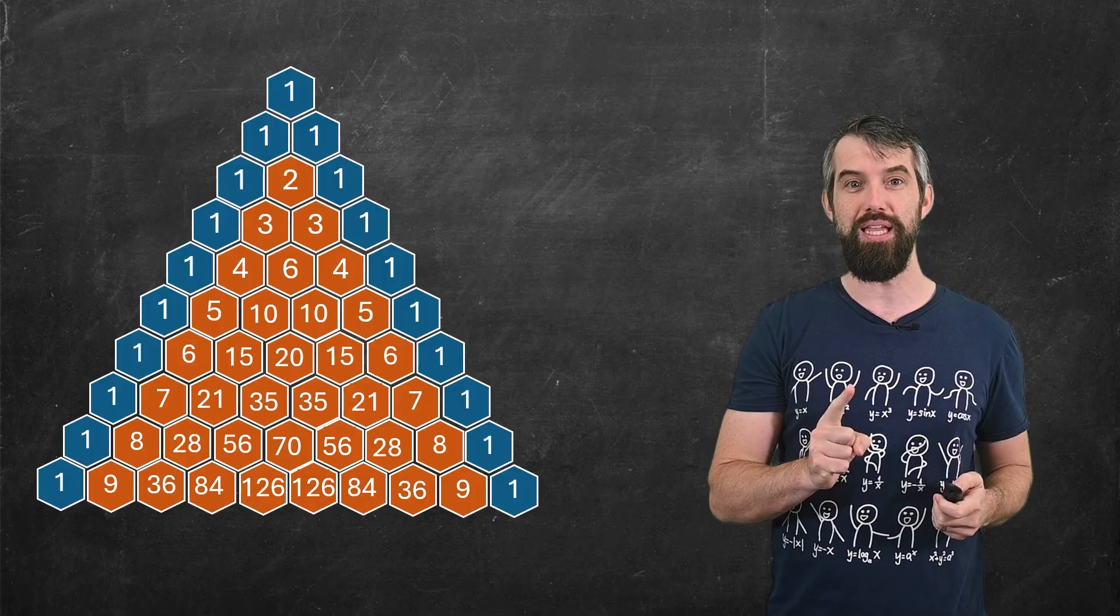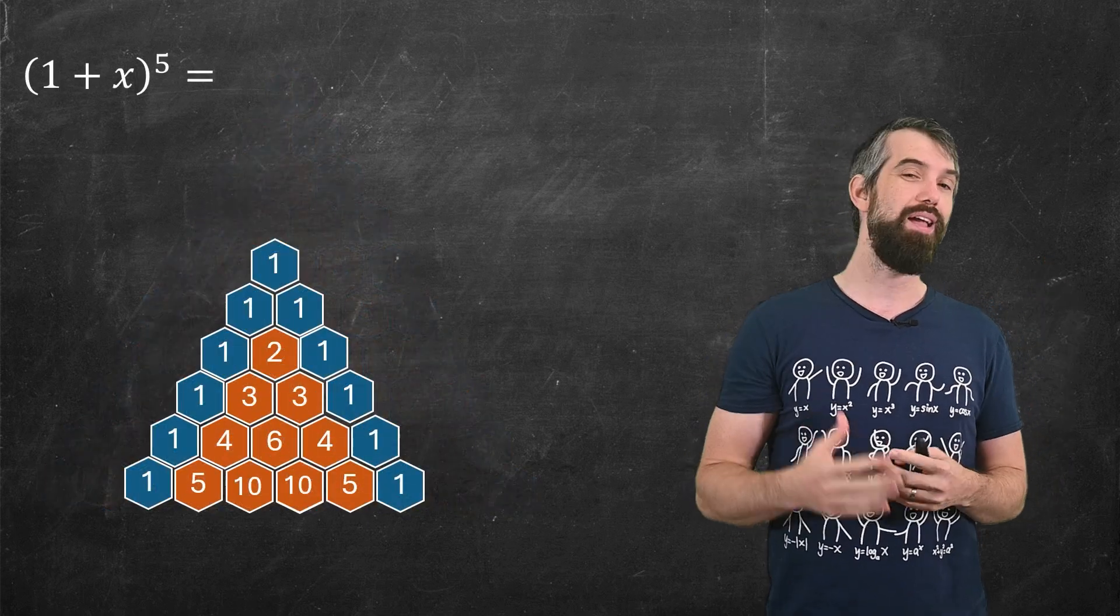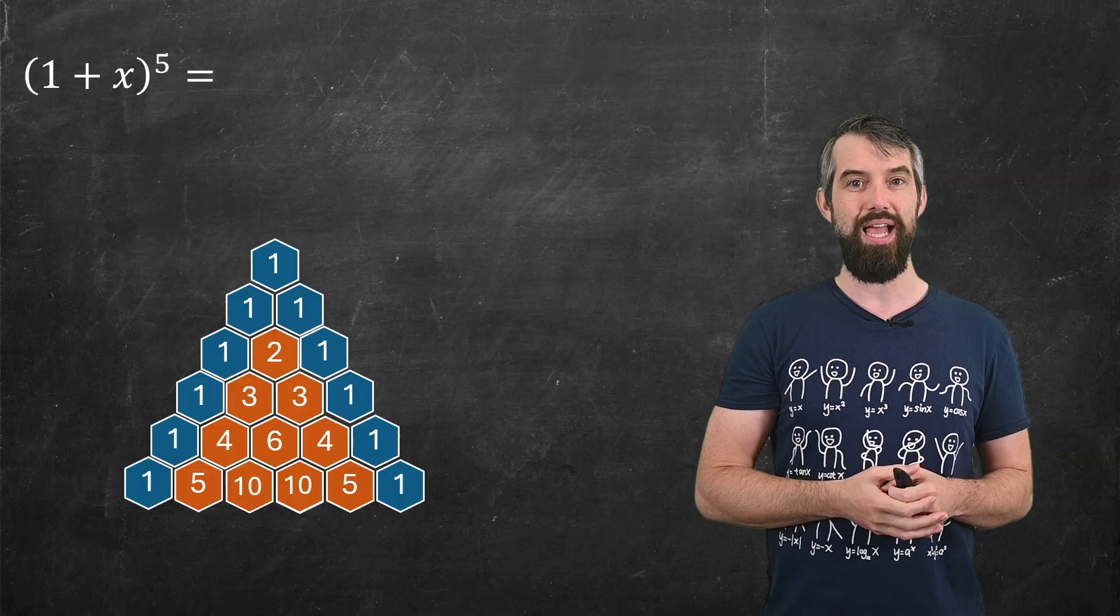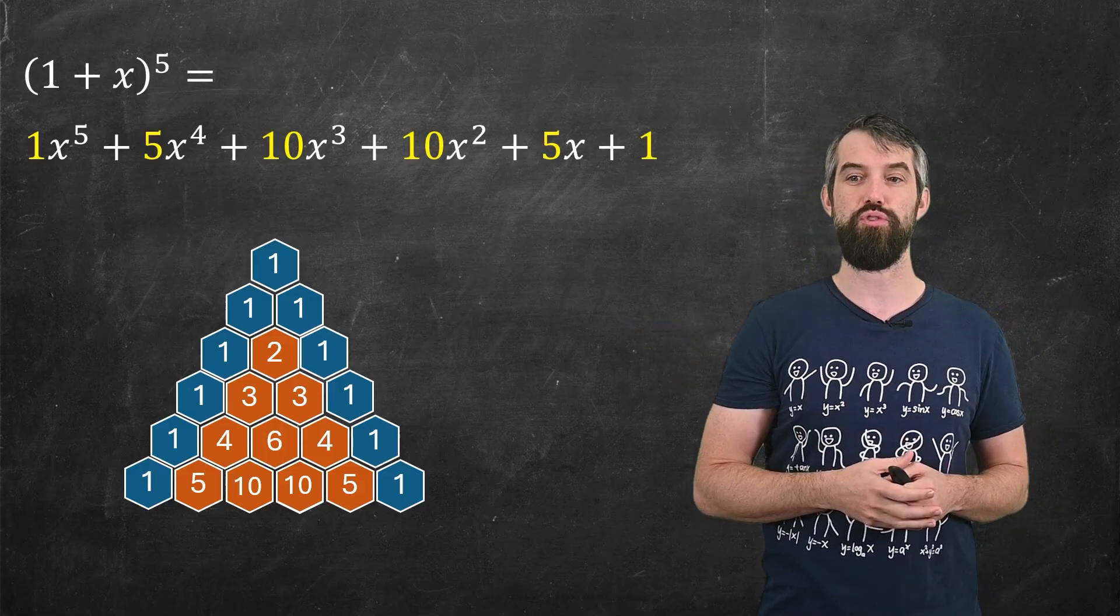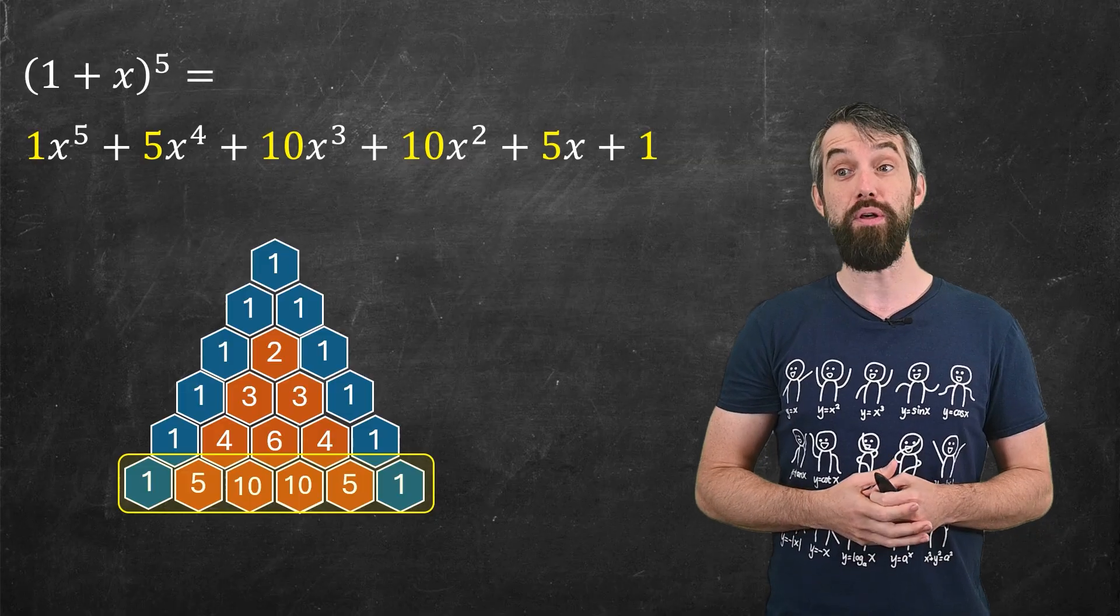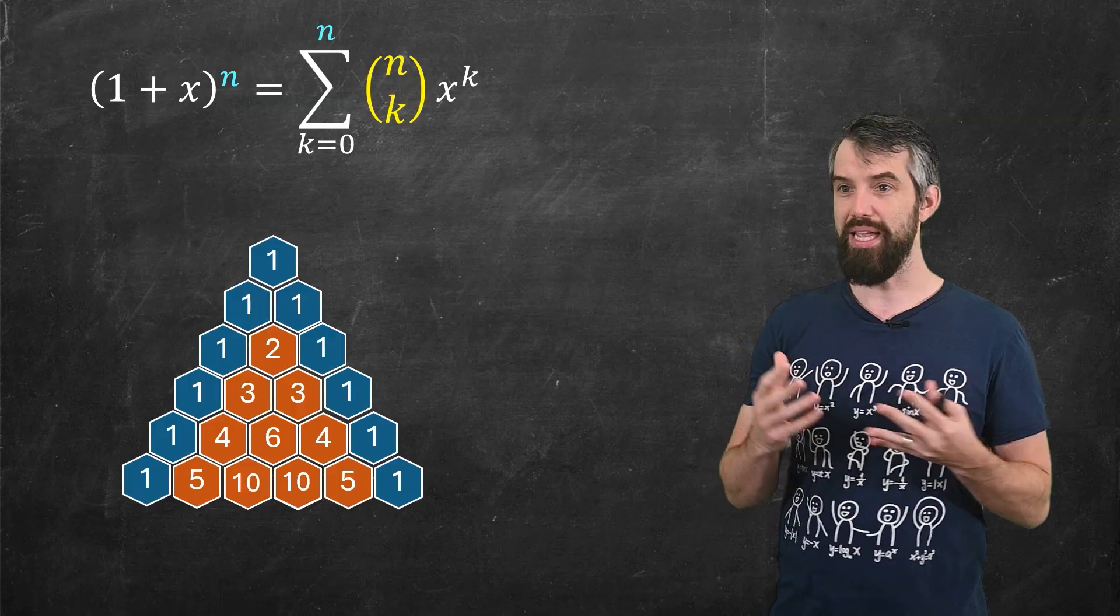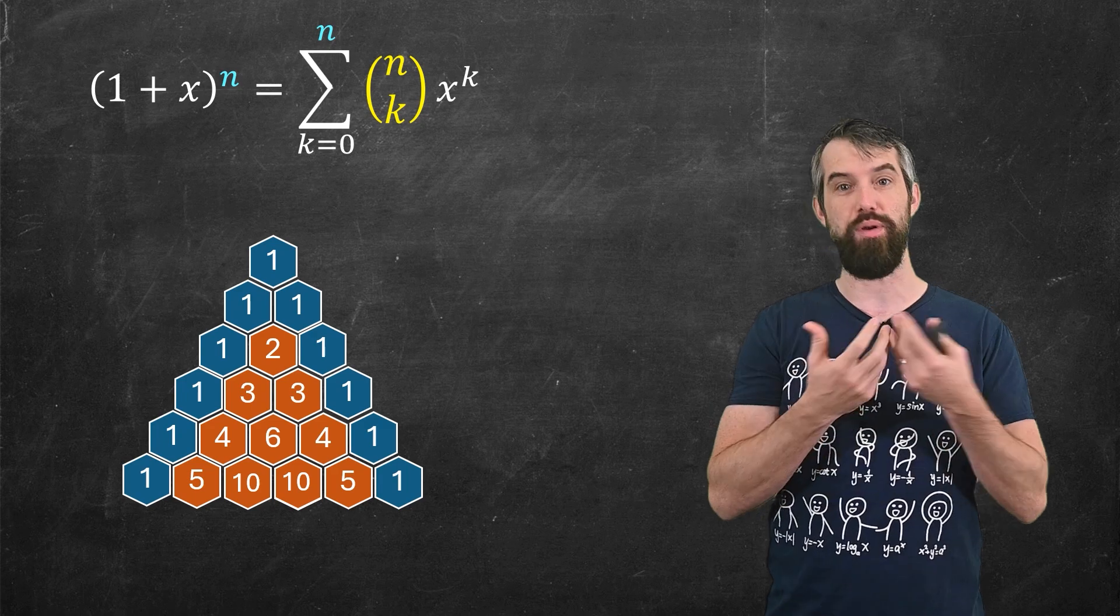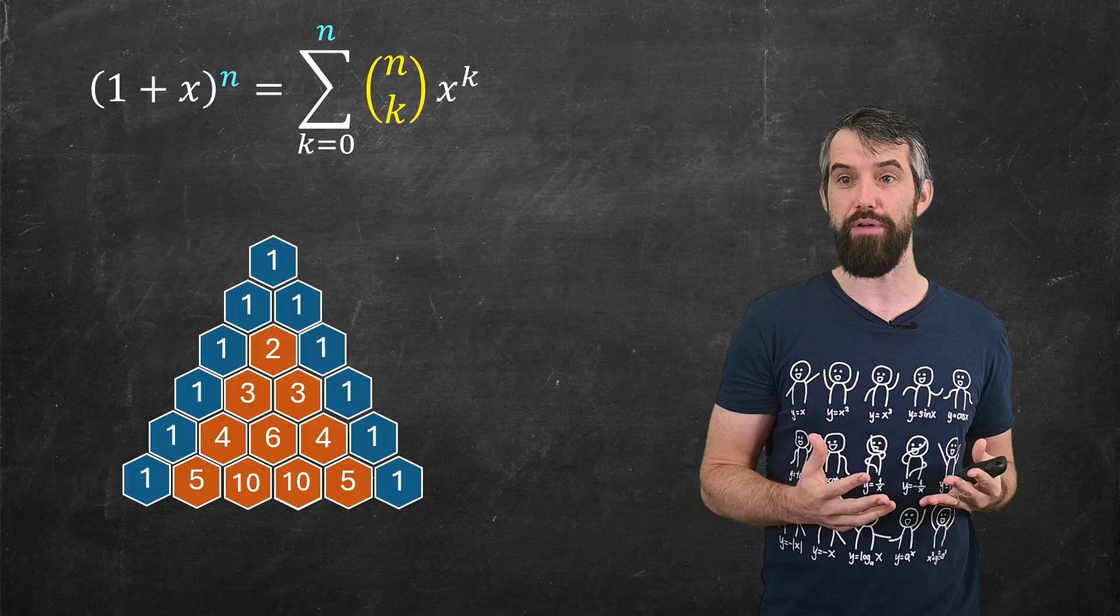One in specific is it's really helpful for expanding binomials. Like if I take one plus x to the power of five, the polynomial that this represents has these coefficients one, five, ten, ten, five, one. That shows up directly as this row on Pascal's triangle. And there's a formula for this. The binomial theorem says that one plus x to the power of n is a sum, the way I say this is n choose k. This is the number of ways I can choose k objects from within n items. It can be expressed in terms of factorials and then multiplied by x to the k.